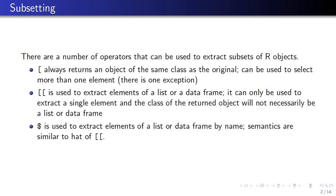The dollar sign is used to extract elements of a list or a data frame that have a name. Objects can have names, and one reason you use names is so that you can reference elements by those names. The semantics of the dollar sign are similar to the double bracket in the sense that when you use the dollar sign to extract an element, it may or may not be of the same class as the original object.